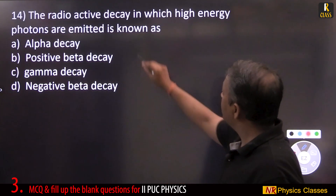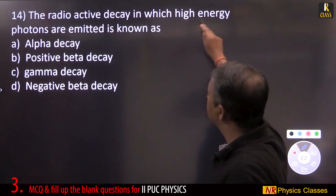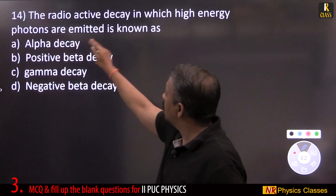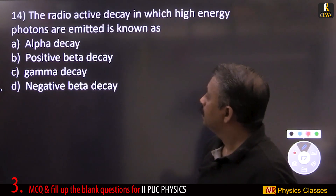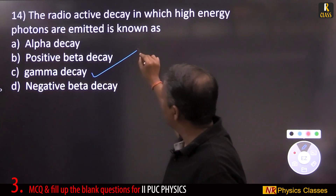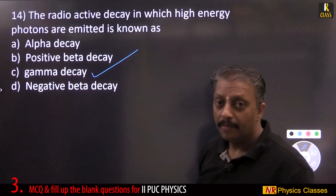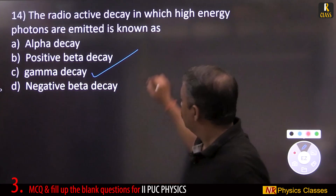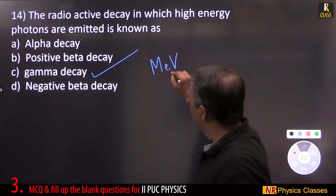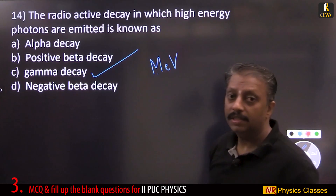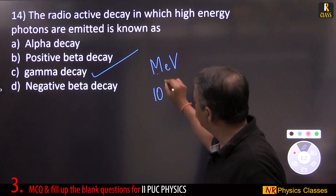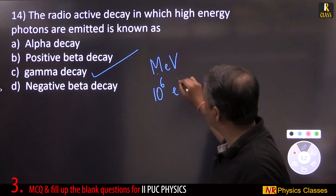The radioactive decay in which high energy photons are emitted is gamma decay. Gamma decay energy is in terms of mega electron volts — on the order of 10⁶ electron volts.